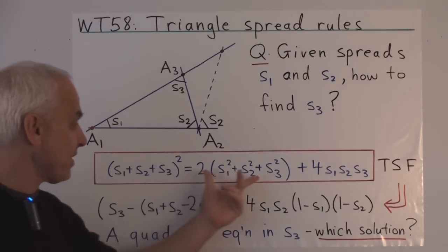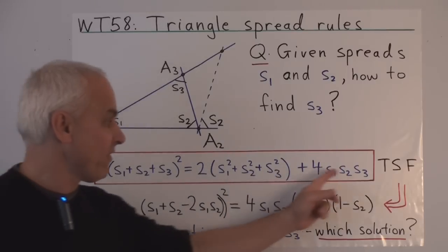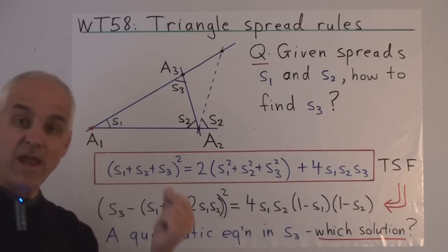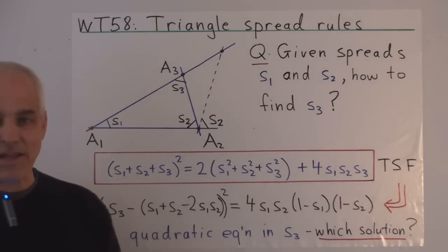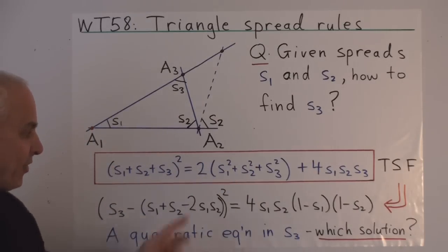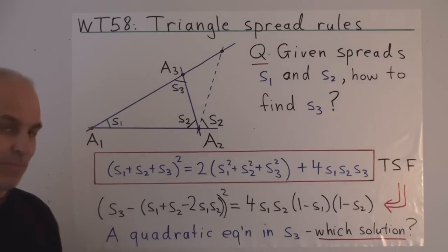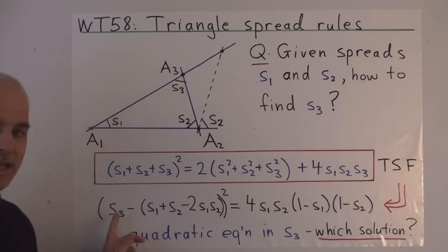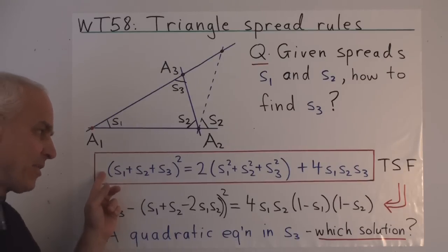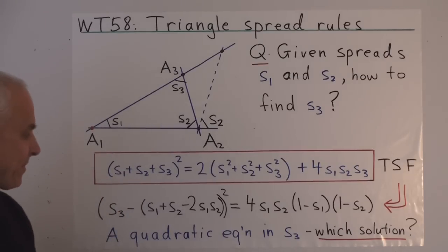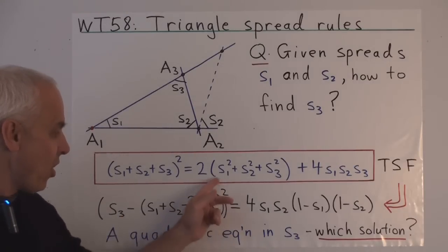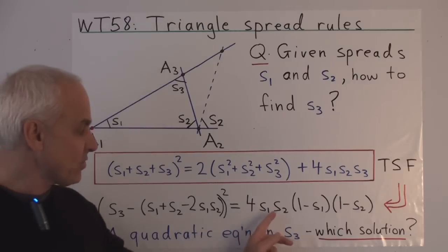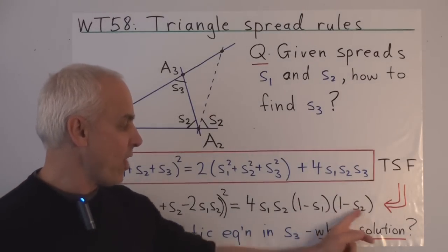It's a formula involving the three spreads which is quadratic in any one of the variables, so it's a quadratic equation that we need to solve. The first step is to rewrite this so that the nature of the quadratic equation is more apparent. Here's a completely equivalent form of the triple spread formula: S3 minus (S1 plus S2 minus 2·S1·S2), all squared, equals 4 times S1 times S2 times (1 minus S1) times (1 minus S2).